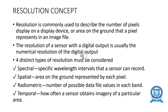Next is the resolution concept in sensing techniques. Resolution is commonly used to describe the number of pixels displayed on a display device, or the area of the ground that a pixel represents in an image file. Resolution is a broadly used term in remote sensing. There are four distinct types of resolution: spectral resolution, spatial resolution, radiometric resolution, and temporal resolution.